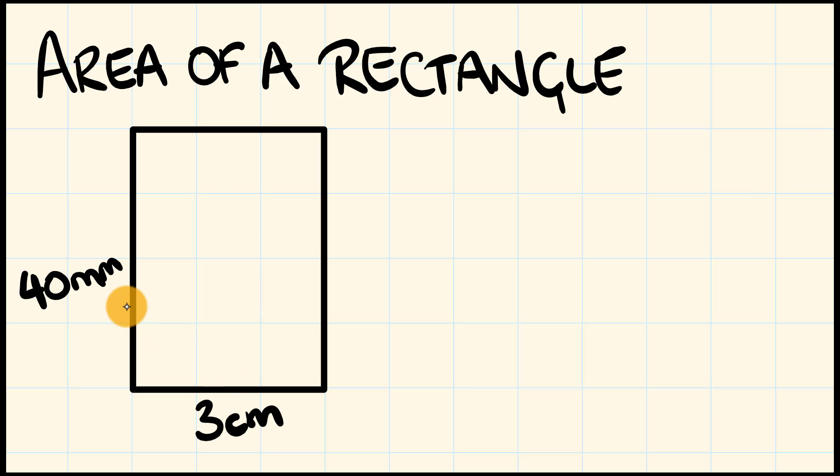So what we're going to do is we're going to convert this 40 millimetres here into its centimetre equivalent value. That is 40 millimetres is equal to 4 centimetres. Now we can go through and work out the area, but this time it's going to be in square centimetres. So what do we have?